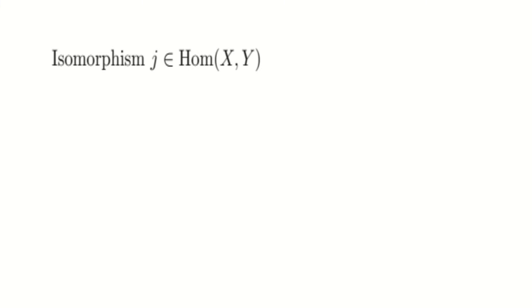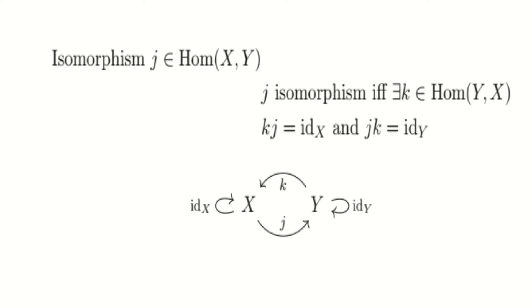An isomorphism is a special type of arrow between two objects. Specifically, an isomorphism J, from A to B, is an arrow with an inverse K, such that these equalities hold. If two objects are isomorphic, then they are essentially the same.